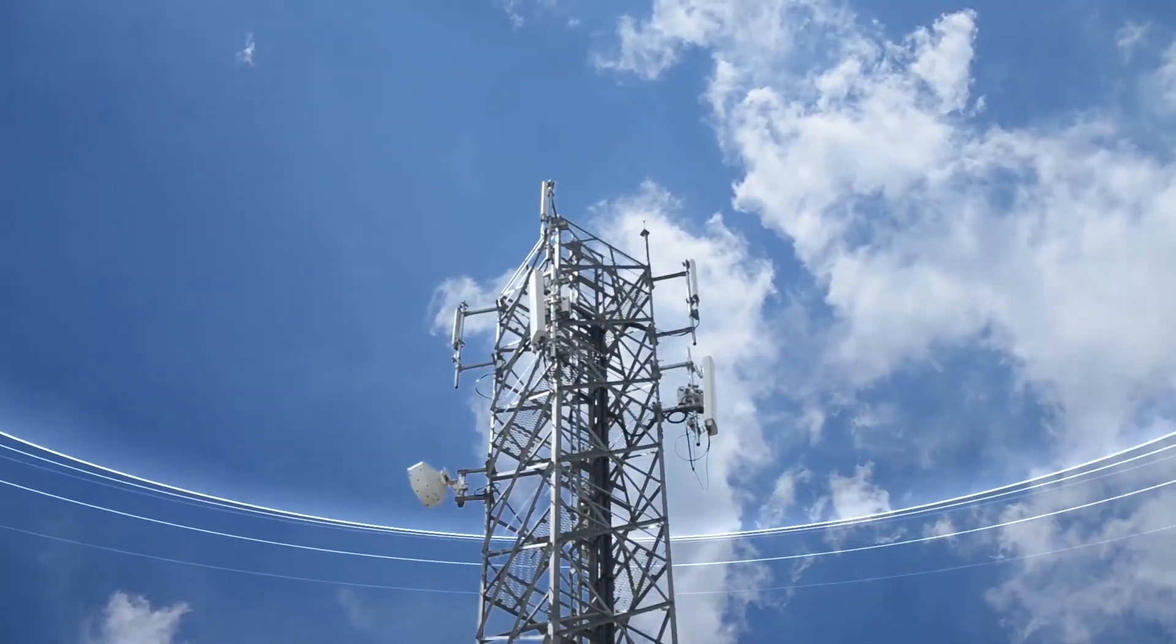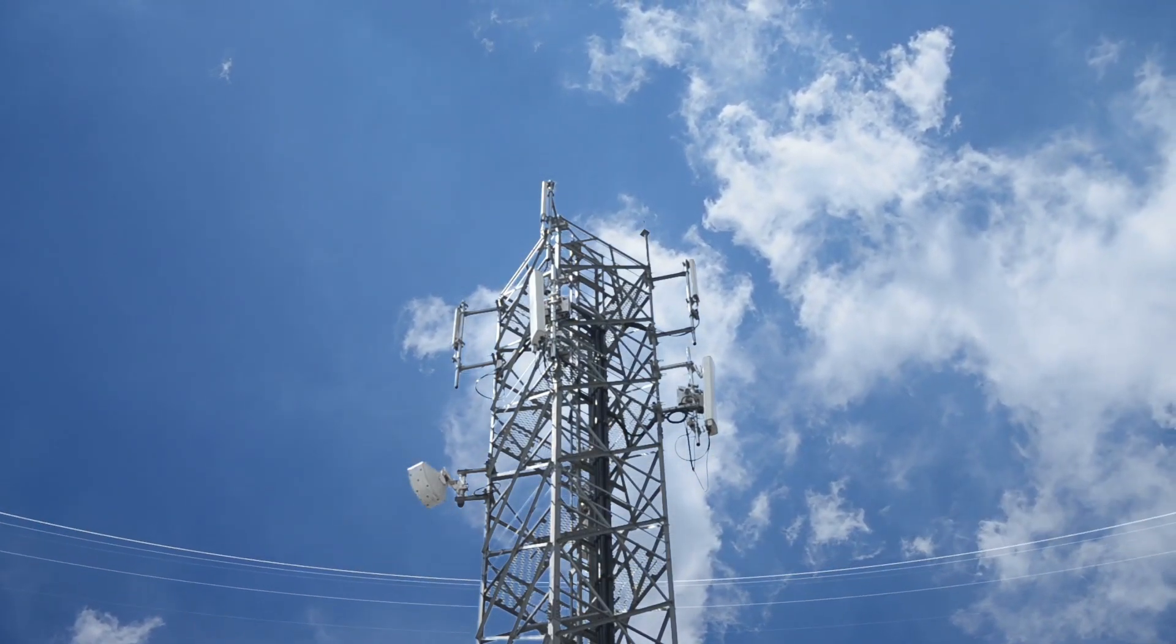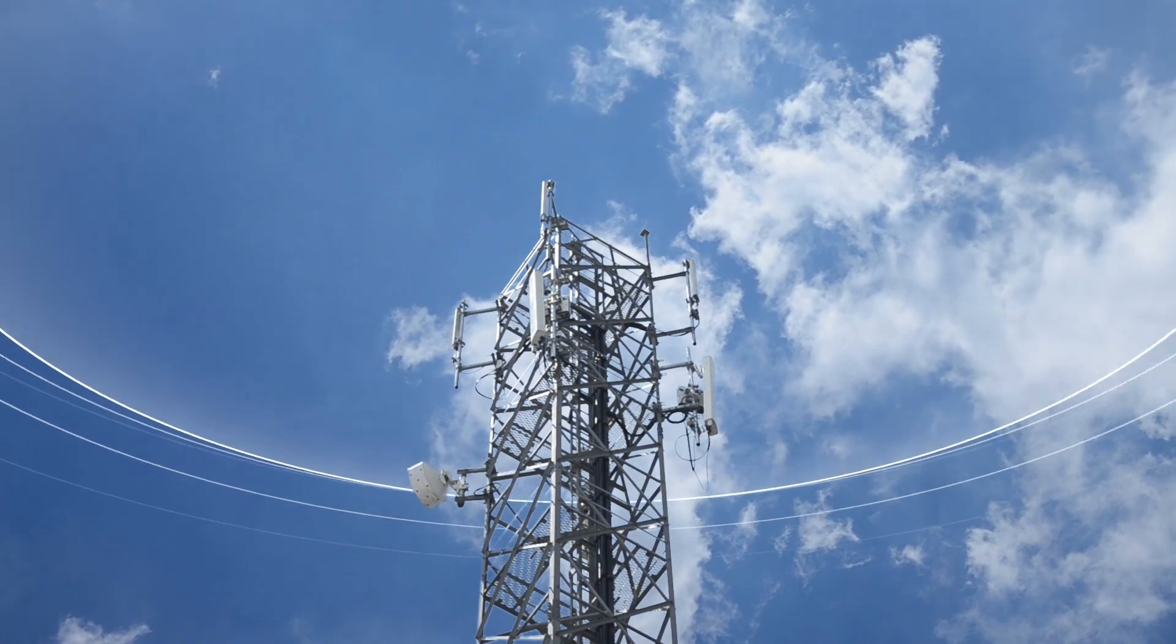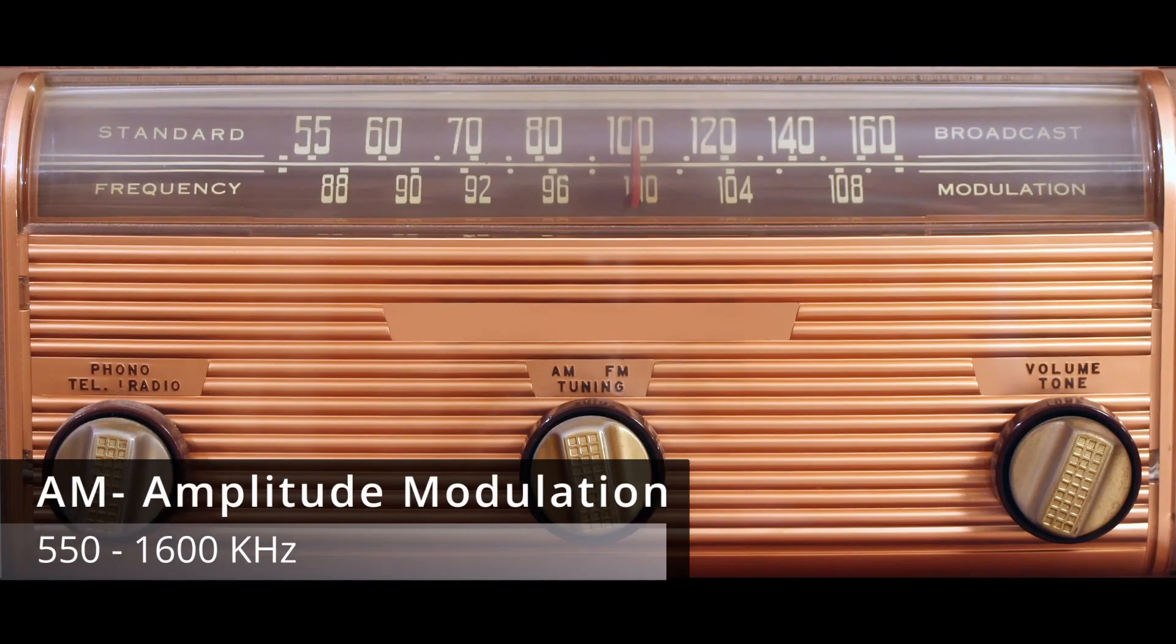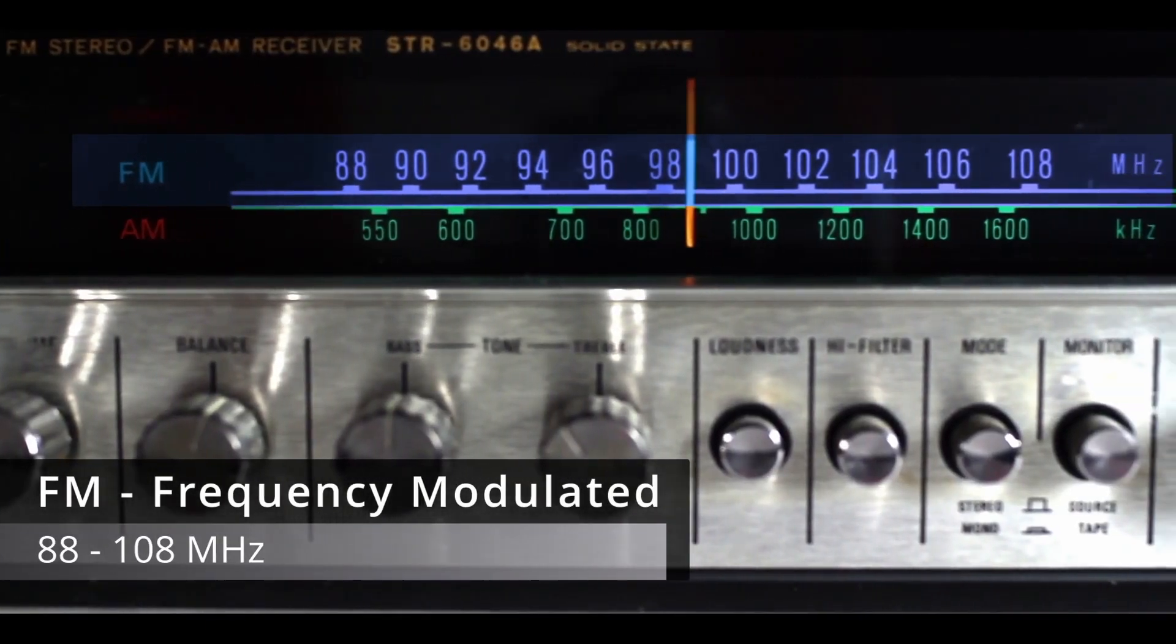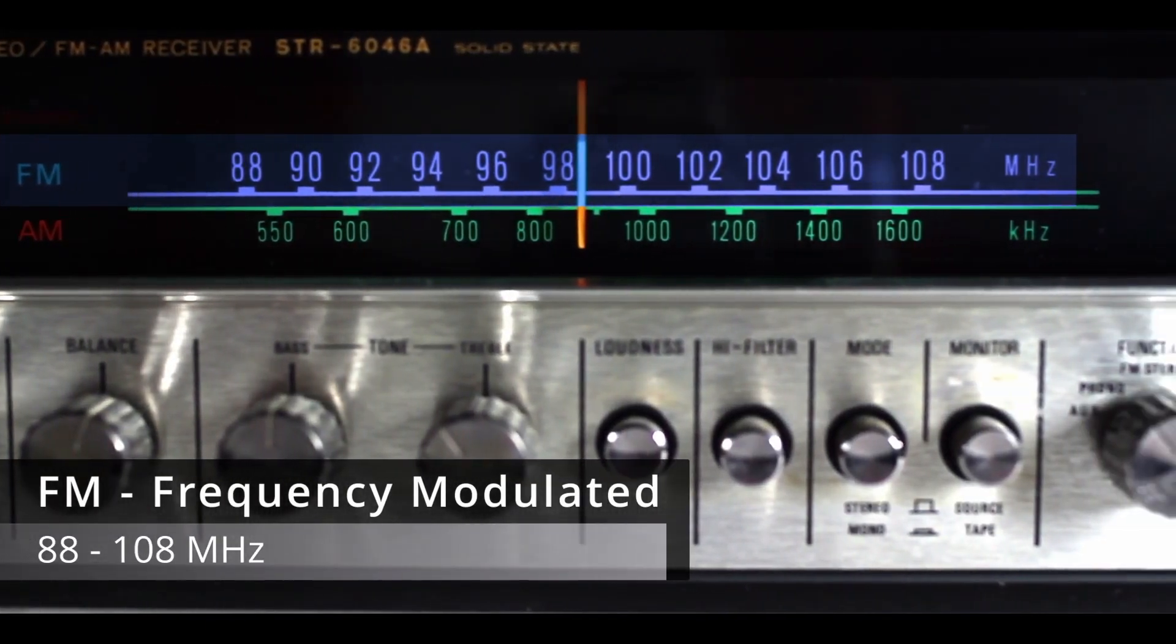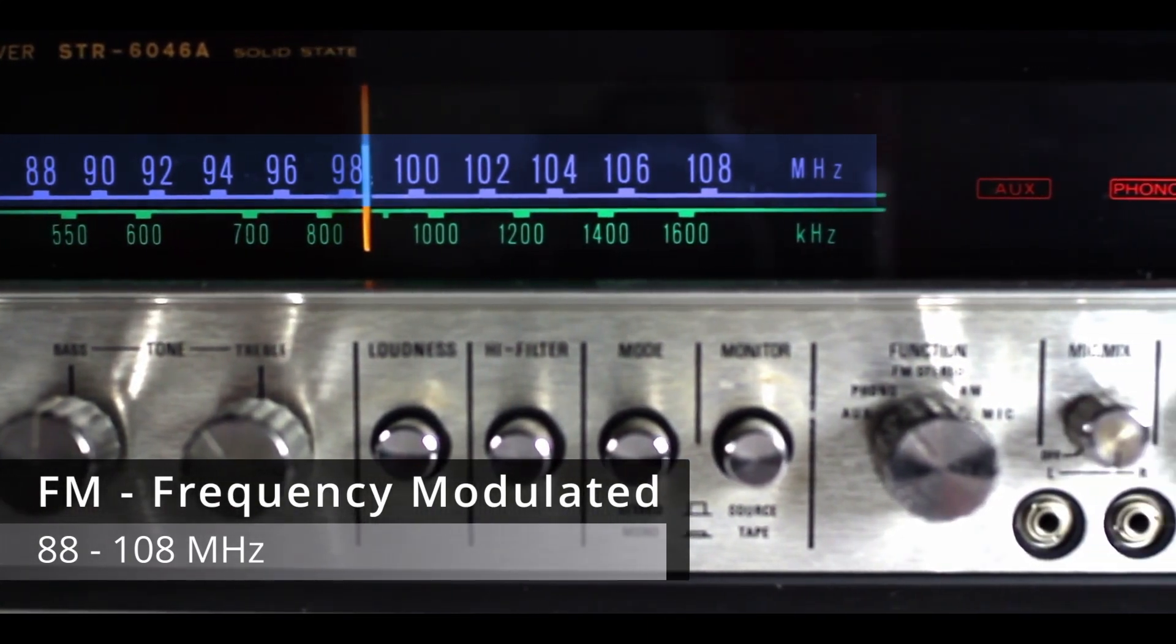A radio wave is generated by a transmitter and detected by a receiver. Radio waves are broadcast in different frequencies. AM amplitude-modulated radio waves are within a frequency range of 550 to 1600 kilohertz. FM frequency-modulated radio waves are within a frequency range of 88 to 108 megahertz.